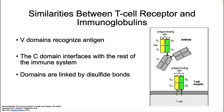Let's dig into the structure of T cell receptors and antibodies and how their diversity is created. There are similarities between T cell receptors and immunoglobulins: both have variable regions and conserved regions. The variable domains (V) recognize the antigen; the conserved domains (C) interface with the rest of the immune system. These domains are linked by disulfide bonds, so they share many structural similarities.